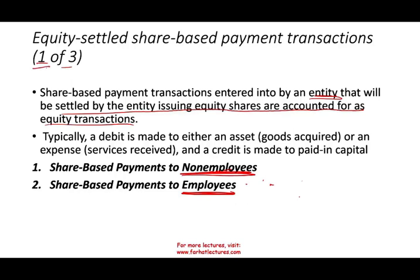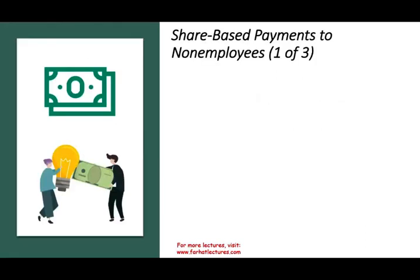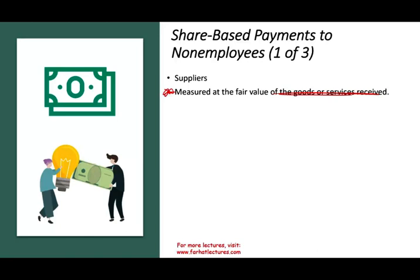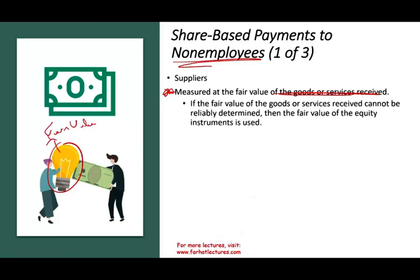We'll start with non-employees — think of them as suppliers. Anyone that is not an employee is a non-employee. You measure the transaction at the fair value of the goods received — that's the first thing. You look at the goods they gave you and use the fair value of those goods. If the fair value of those goods cannot be determined, then the fair value of the equity instrument is used. If the fair value of the equity instrument is used, the measurement date is the date the entity obtained the goods or services.